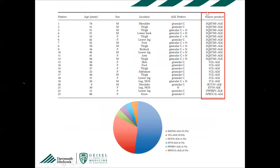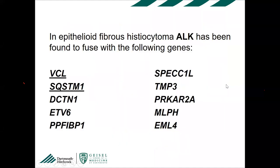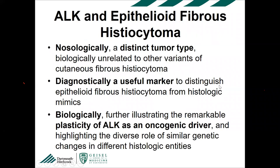So if you see something spindly or histiocytoid that doesn't stain for histiocytic markers, think about doing ALK — you may be dealing with a spindle cell variant of epithelioid fibrous histiocytoma. Like inflammatory myofibroblastic tumor, epithelioid fibrous histiocytoma has many different fusion partners. The most common are VCL and SQSTM1; many other partners have been described. Epithelioid fibrous histiocytoma is now established as a distinct neoplasm biologically unrelated to other variants of cutaneous fibrous histiocytoma.